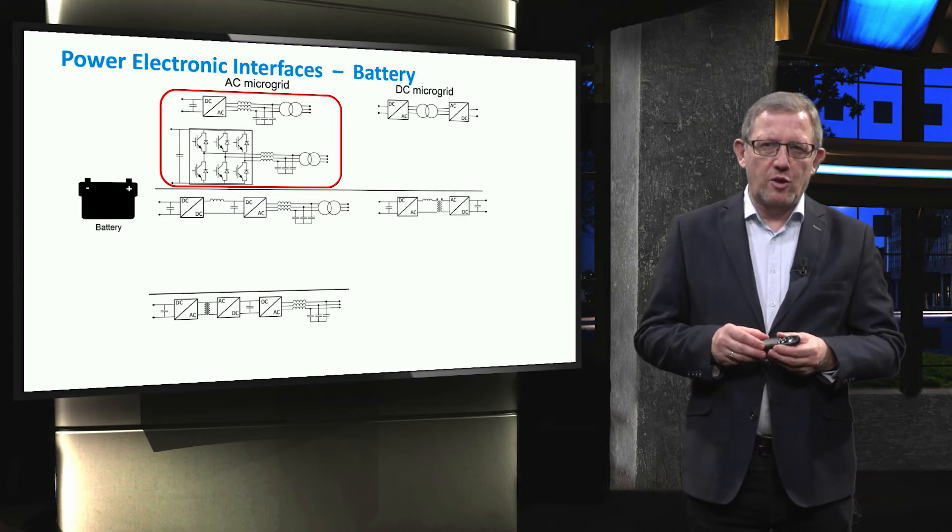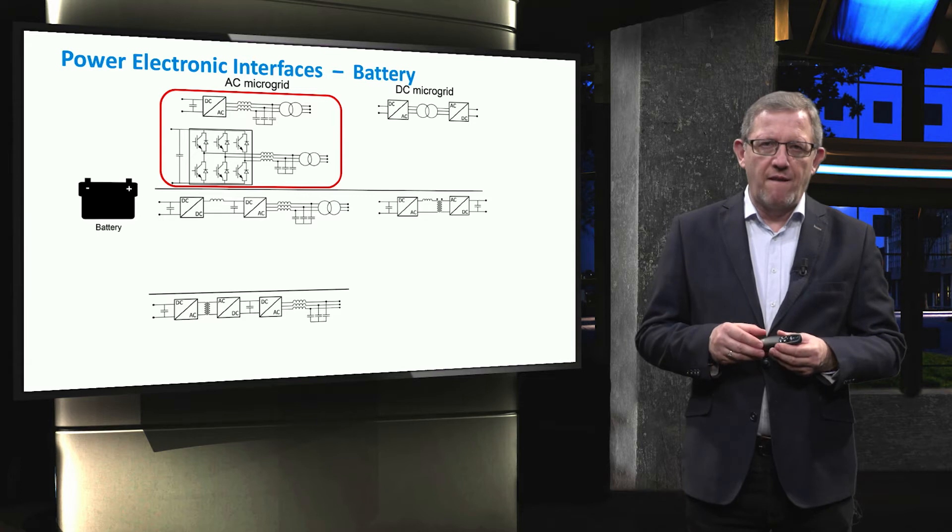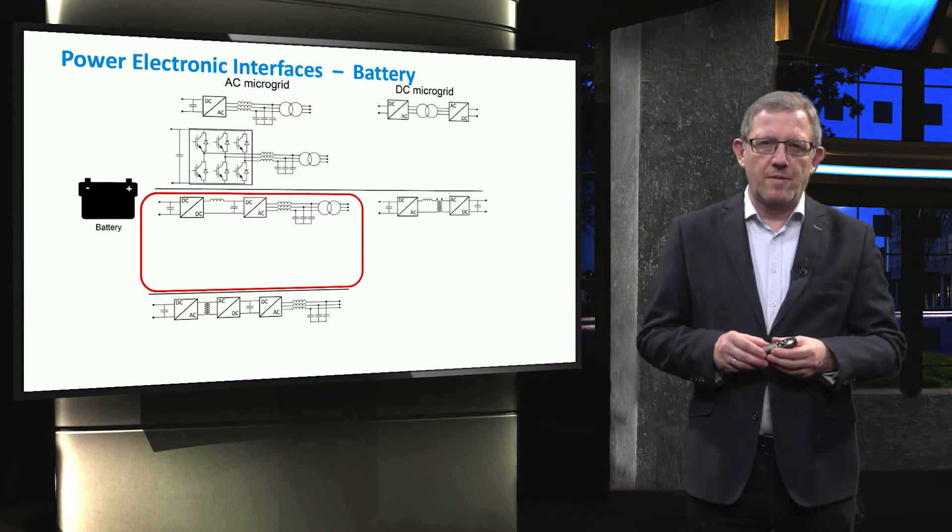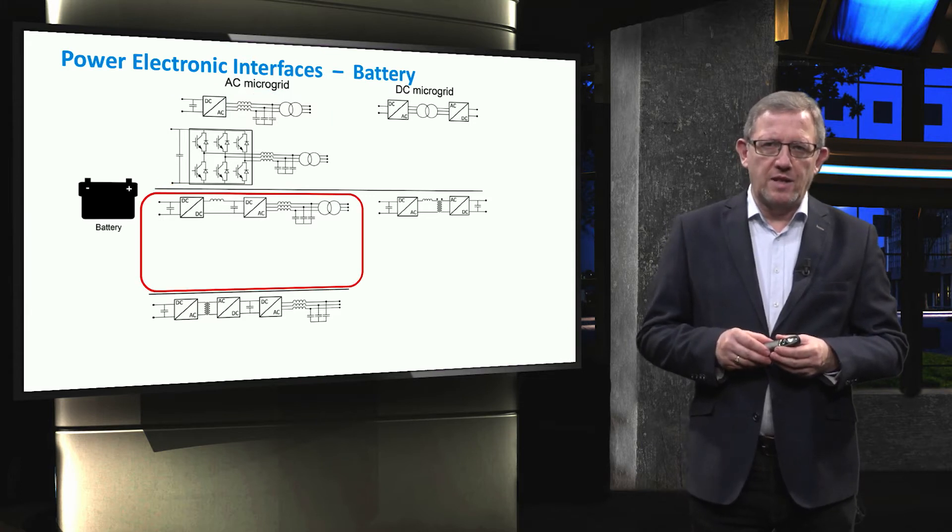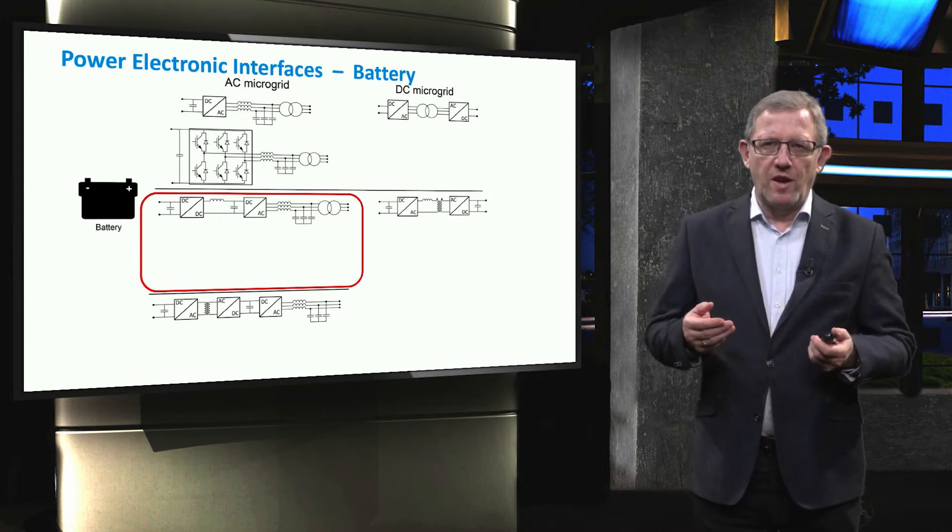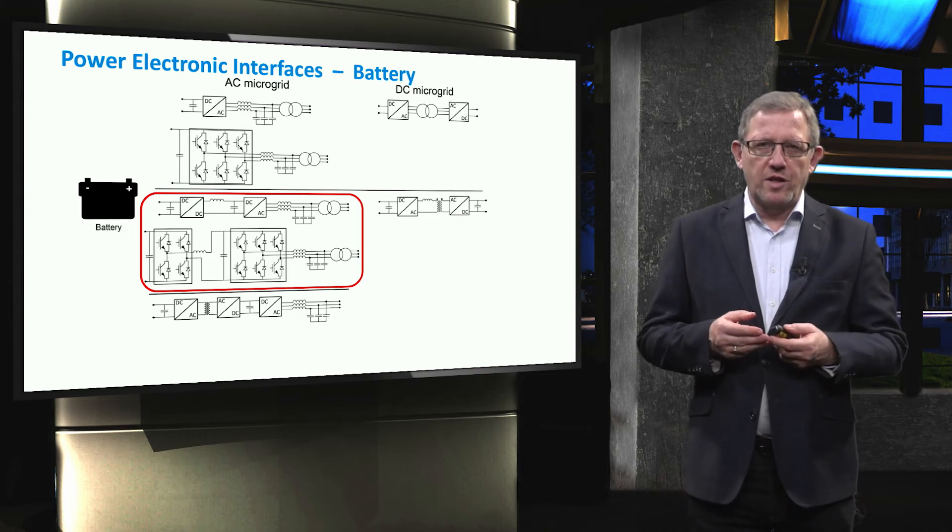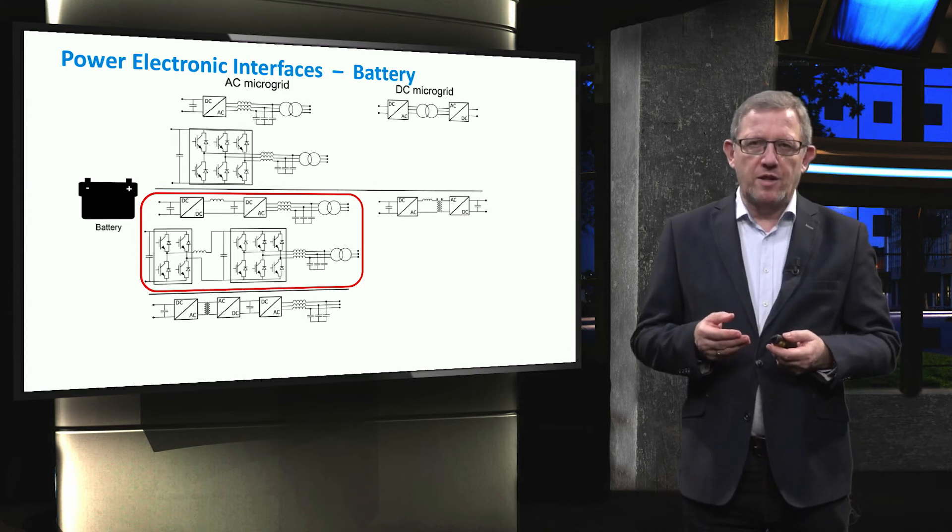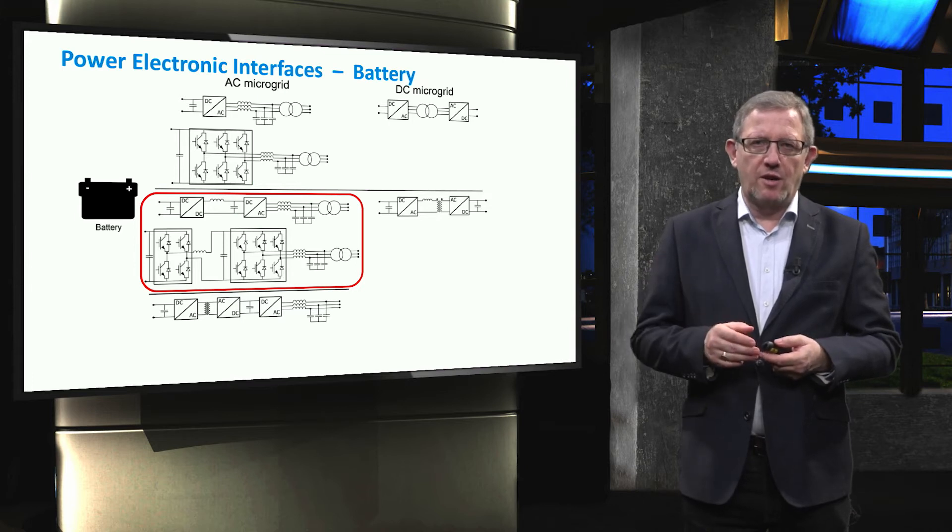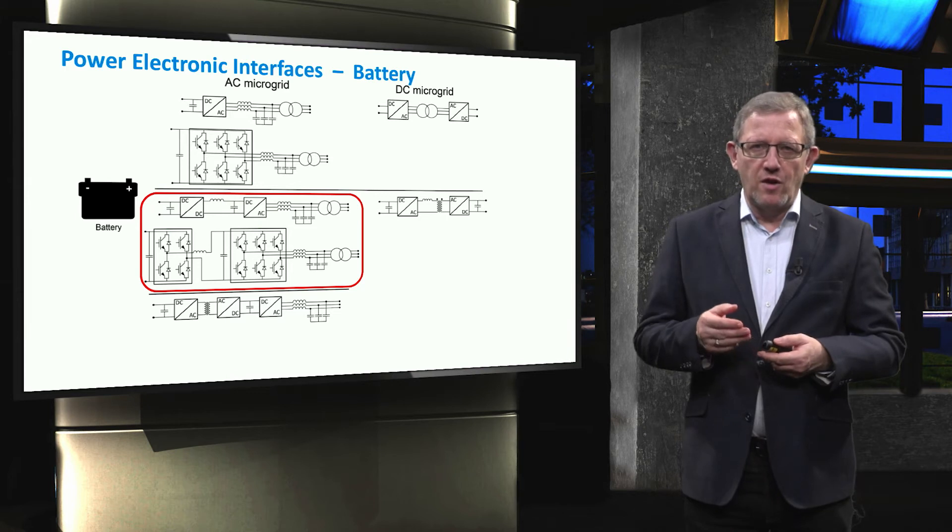For those who are not familiar with the power electronics, simple explanation of this technology will be given later this week. Also, as emphasized before, the conversion stages can be sometimes increased to achieve higher voltage and controllability. For instance, the voltage of the battery can be first stepped up by a DC-DC converter and then the increased DC voltage is inverted to the AC.